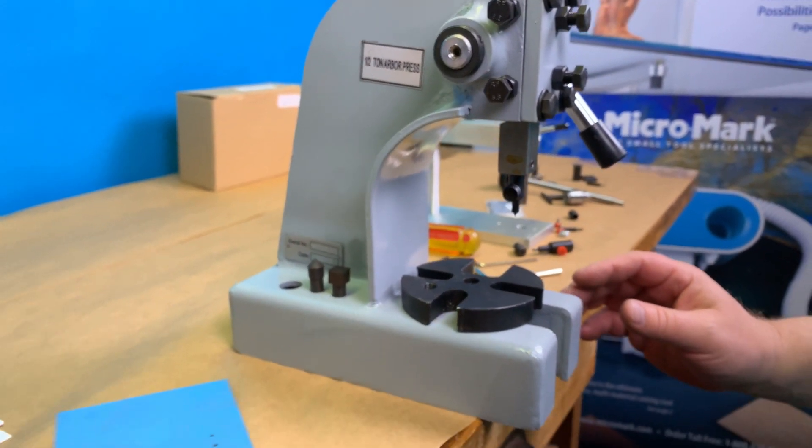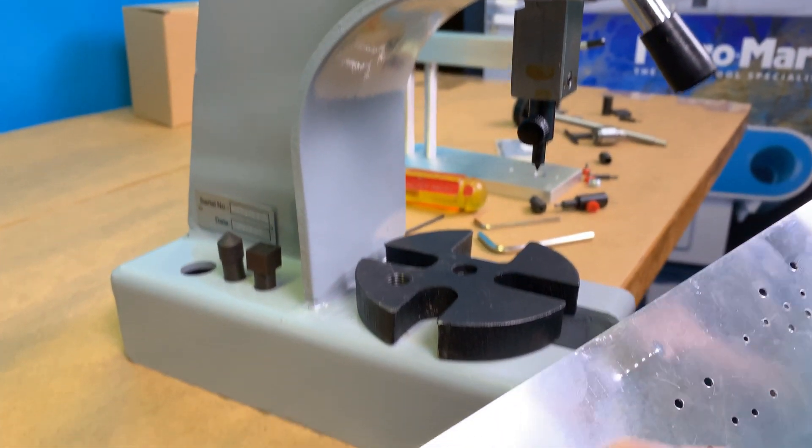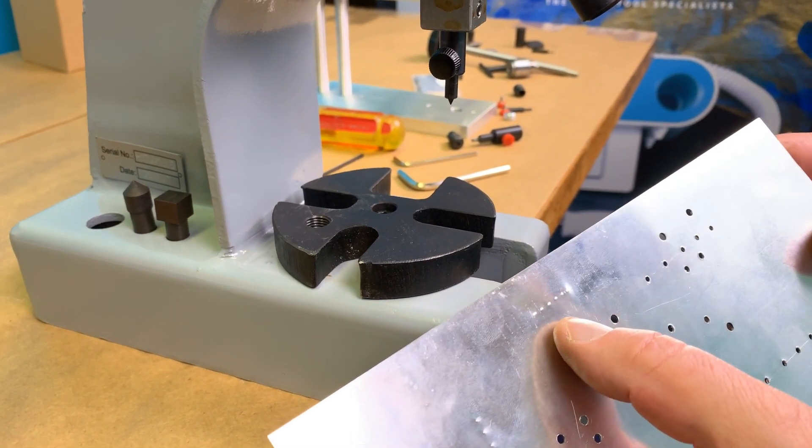This tool can help you make simulated rivets in materials, both in styrene and soft metals.